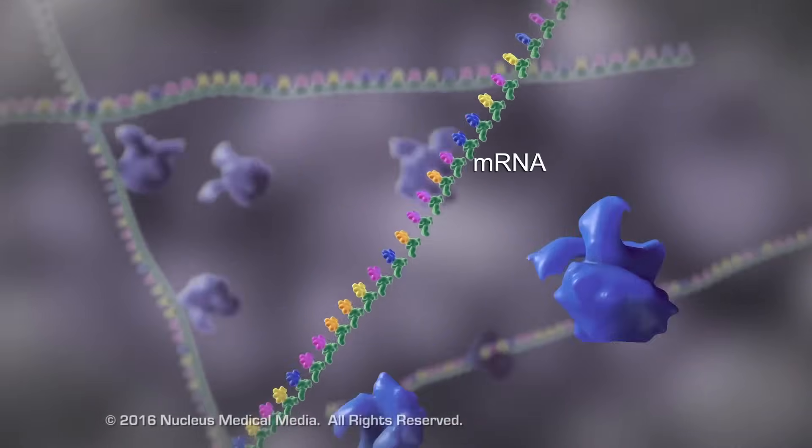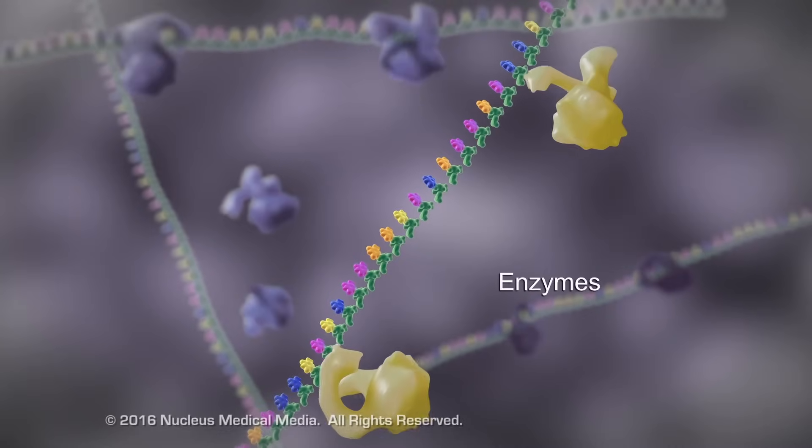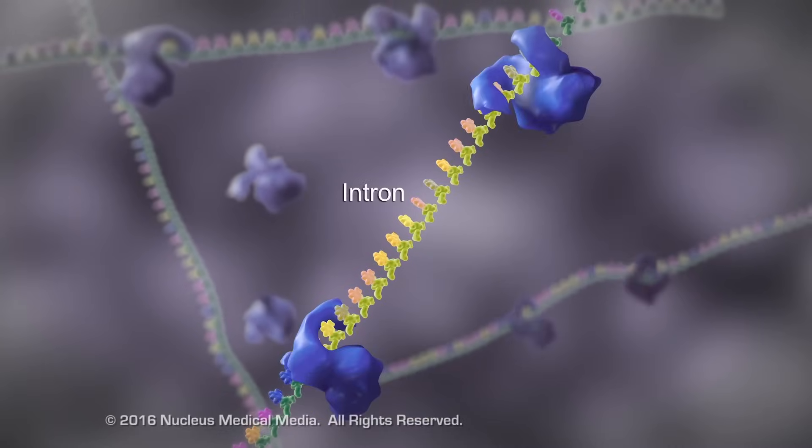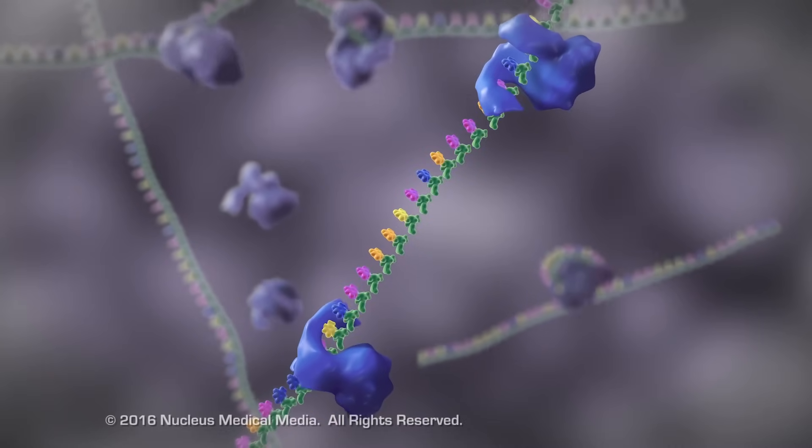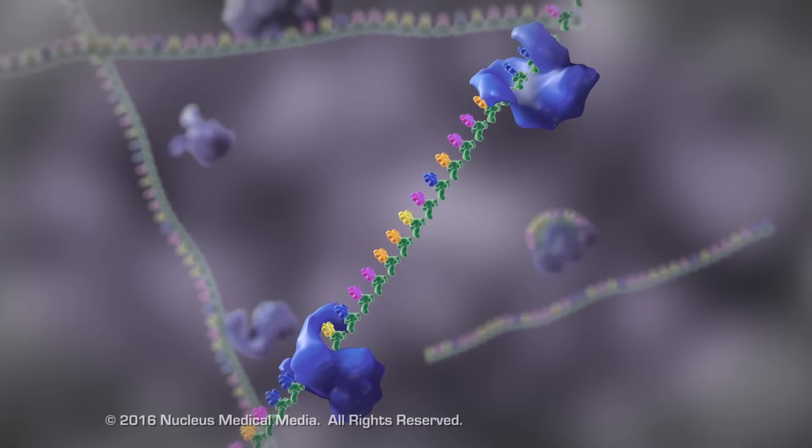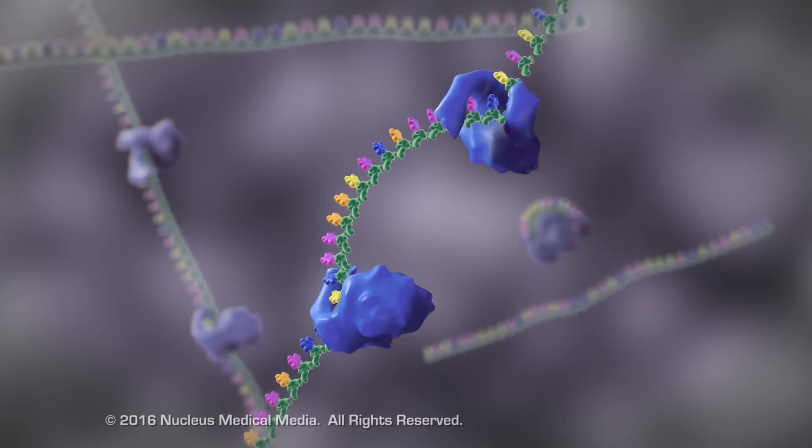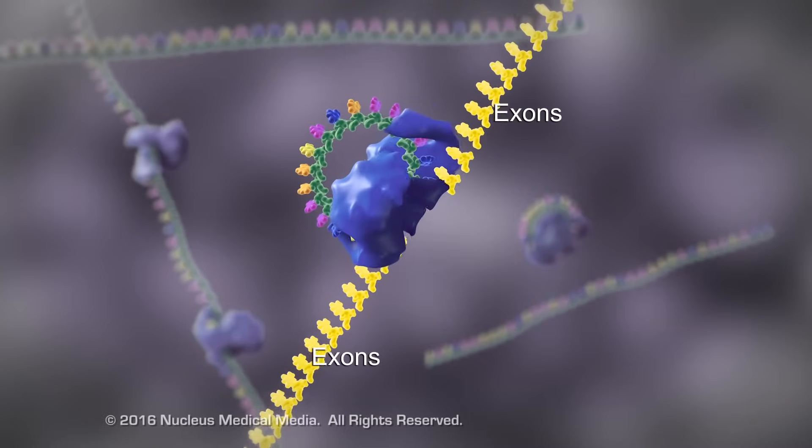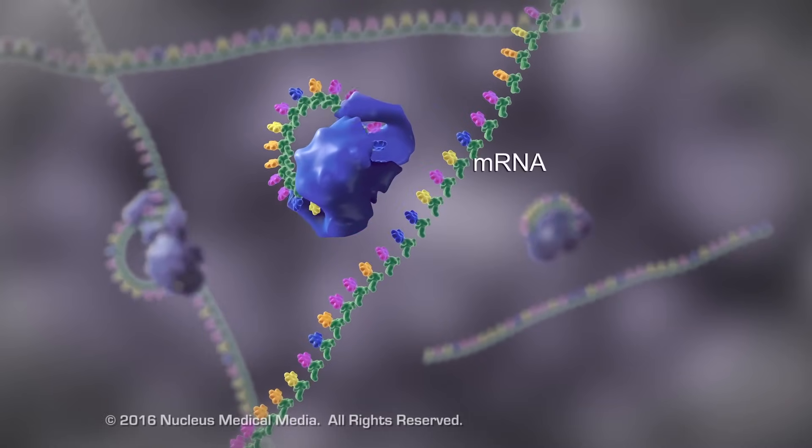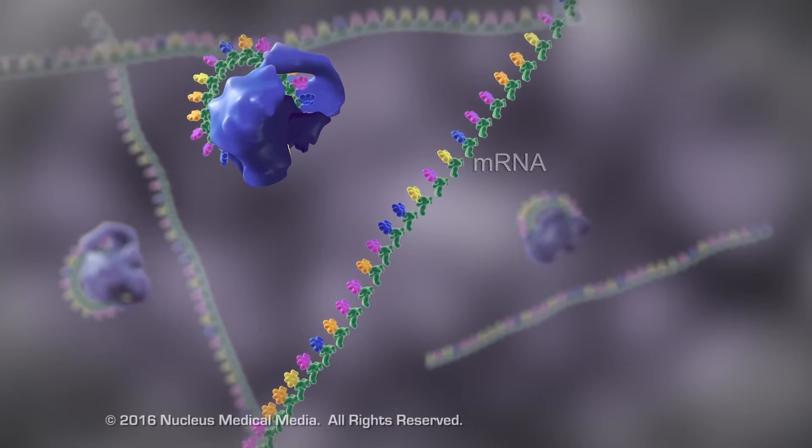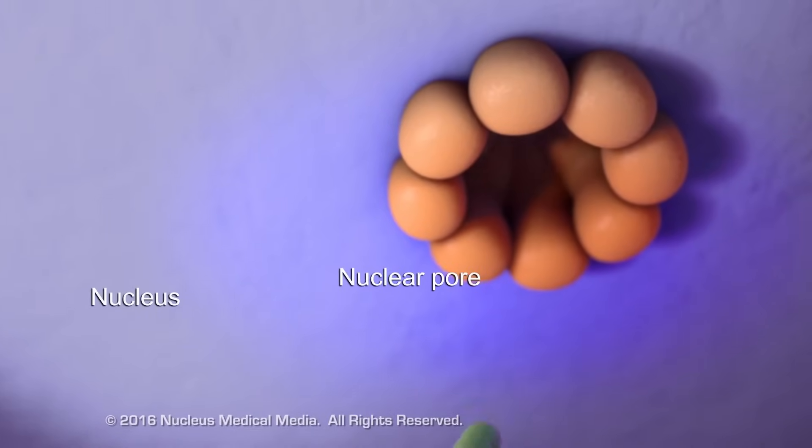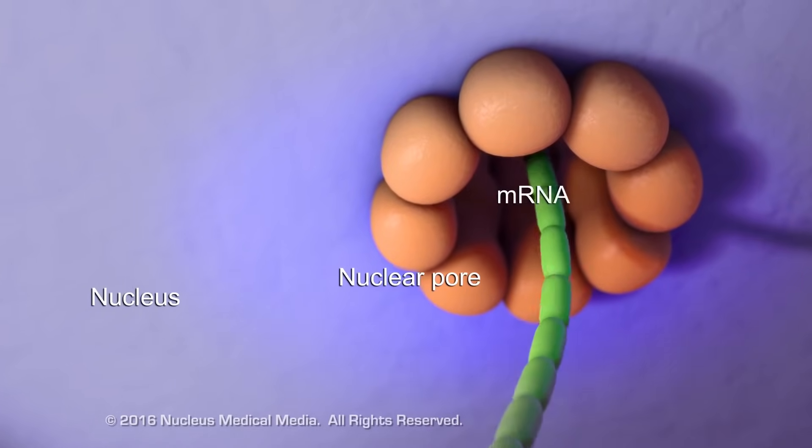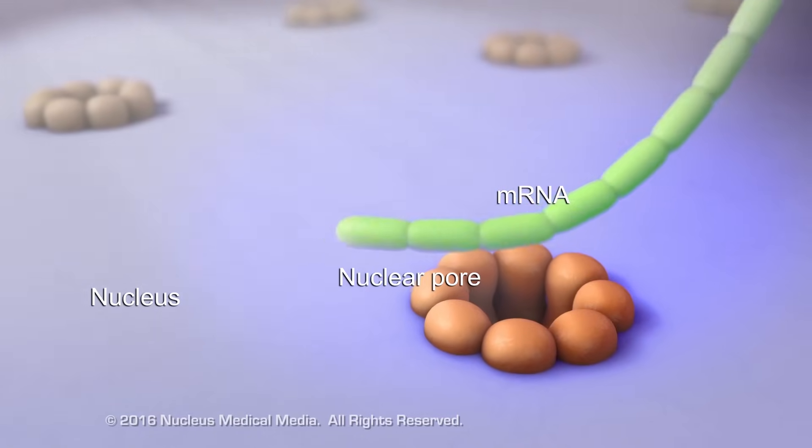Once the mRNA is built, certain enzymes remove introns, or sections that will not be used to build the protein. Enzymes splice the remaining ends, or exons, together. Then, the functional mRNA leaves the nucleus.